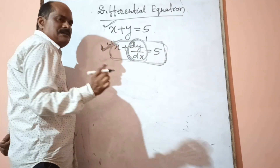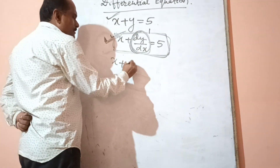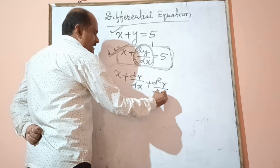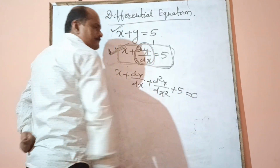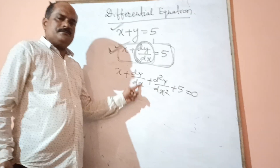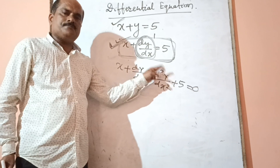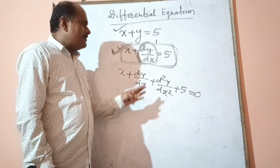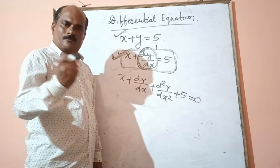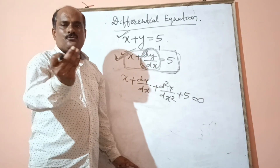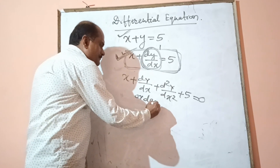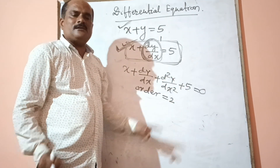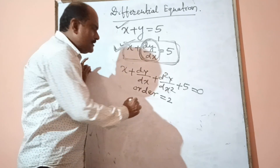Let us consider another example: x plus dy/dx plus the second order derivative of y with respect to x plus 5 is equal to 0. Here, the first order derivative and the second order derivative are both present. The highest order is 2, so the order of this differential equation is 2. The power of the highest order derivative has no explicit exponent, meaning it is 1. So the degree of this differential equation is 1.